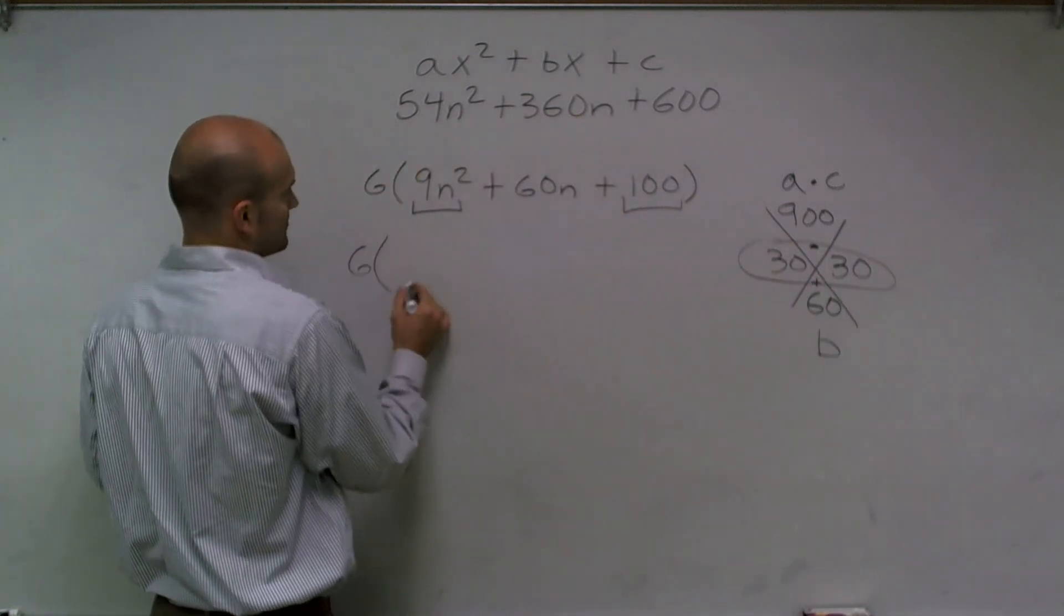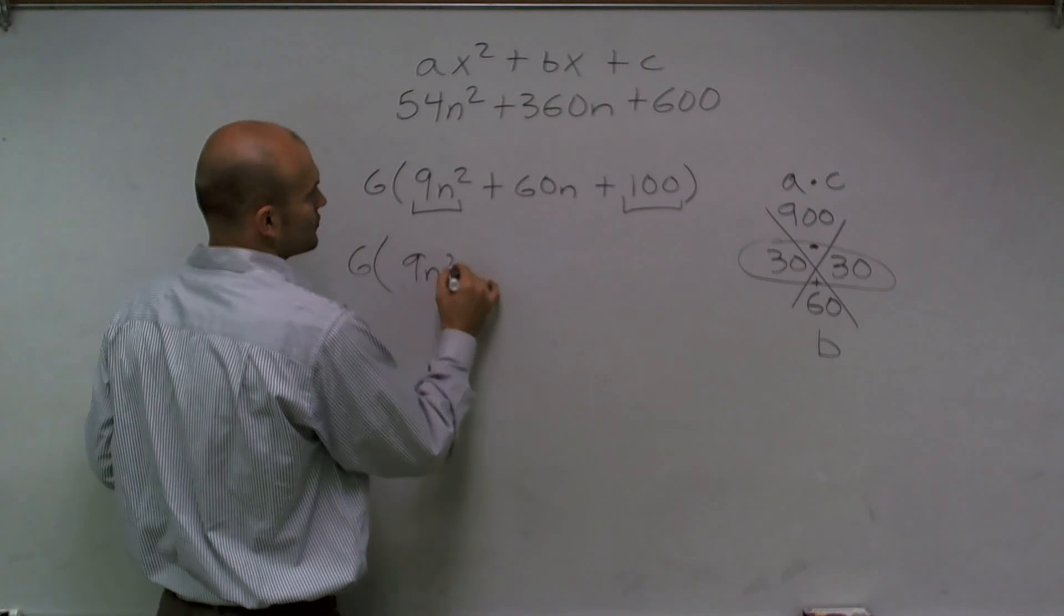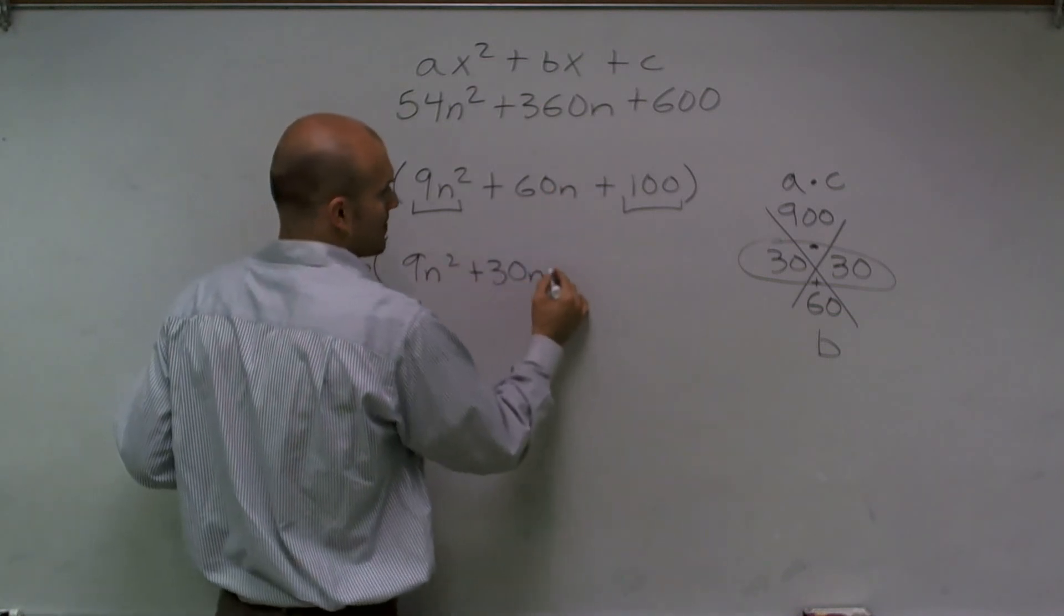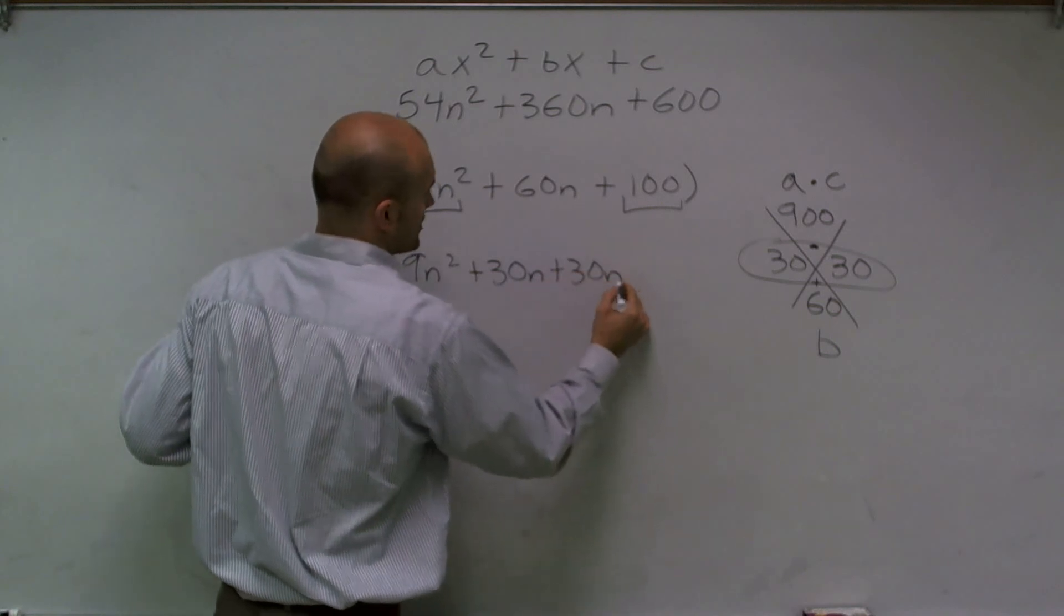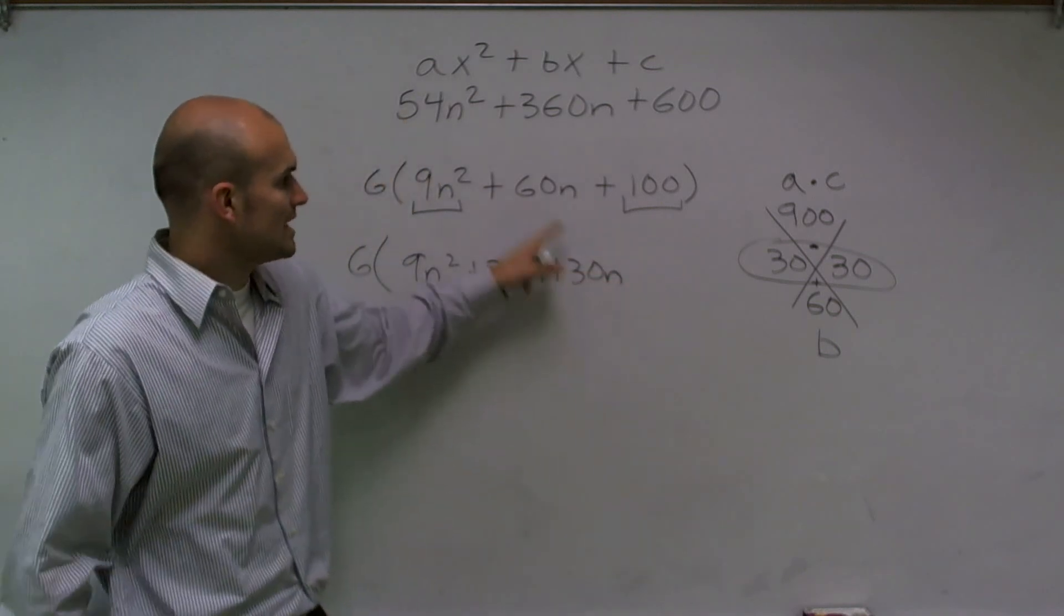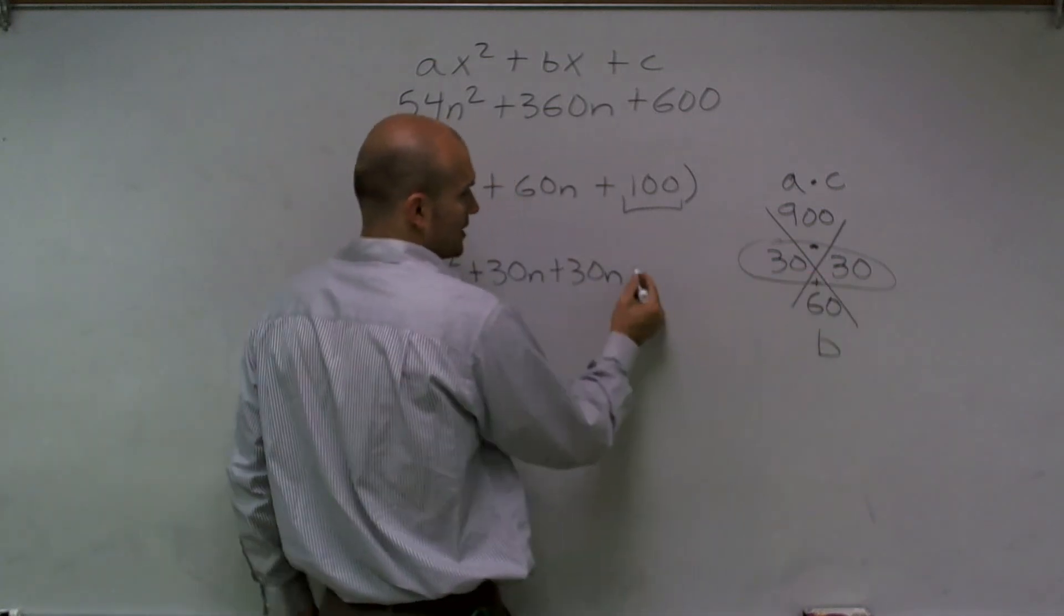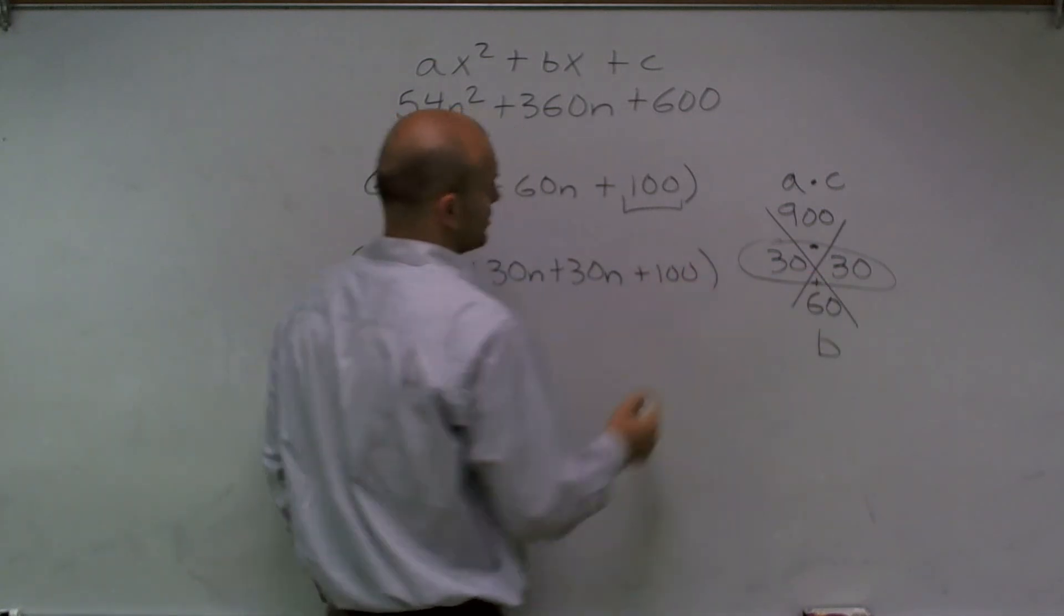So I'm going to have 6 parentheses. So I have 9n squared. Rather than writing 60n, I'm going to write 30n plus 30n. 30n plus 30n would give you 60n, right? I got the 30 plus a 30 from right here plus 100.